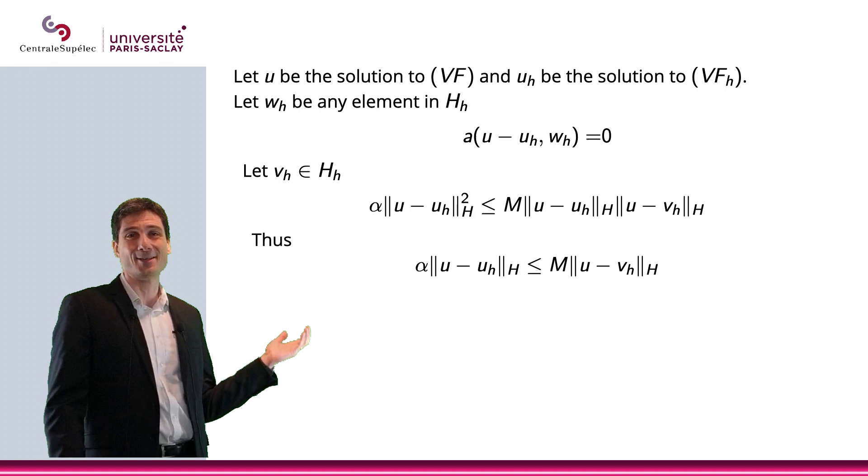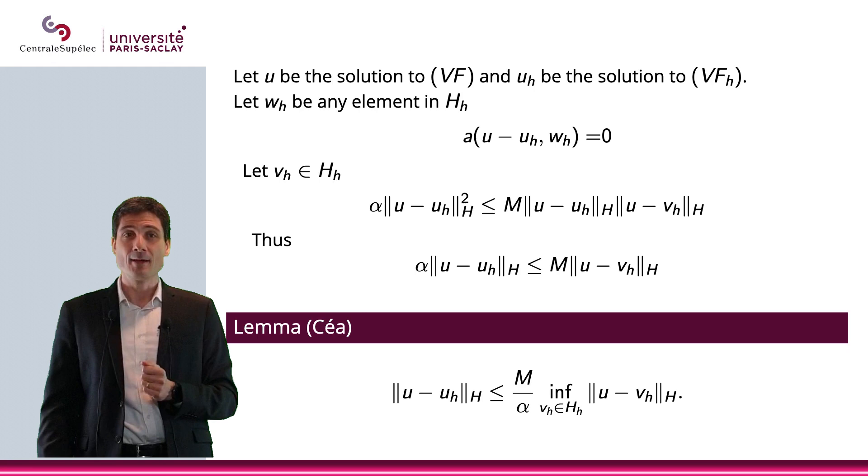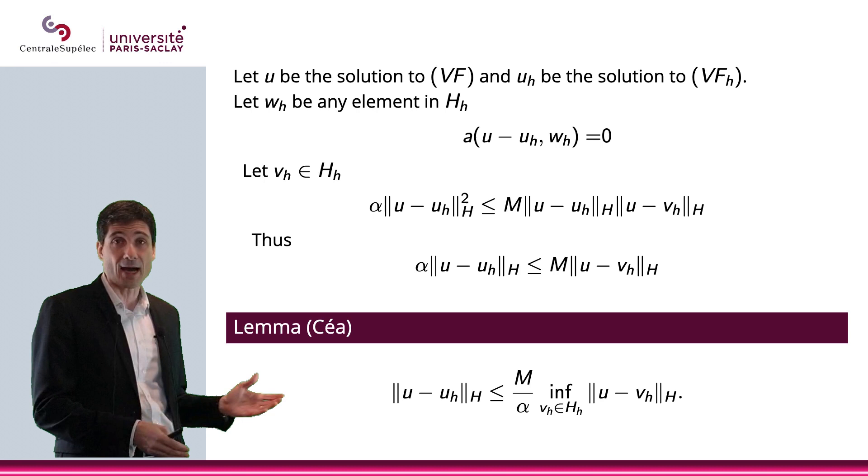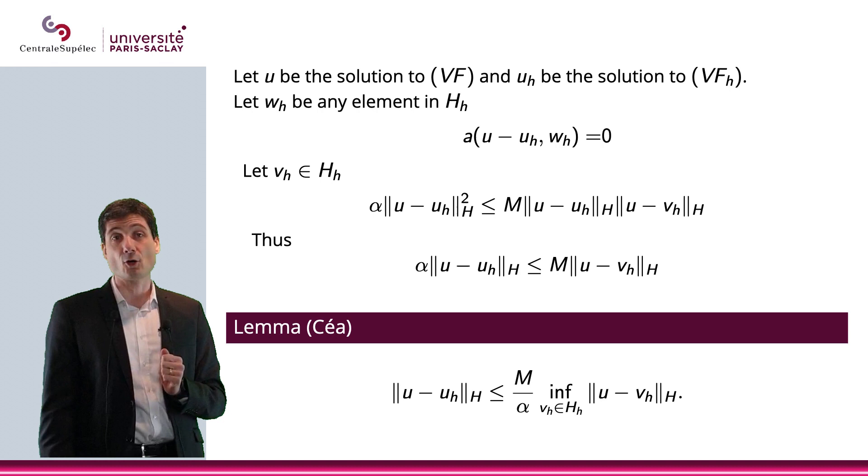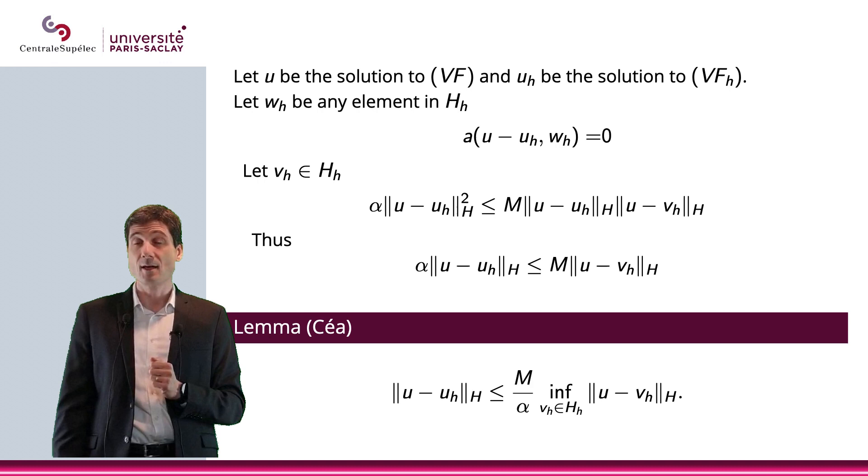And let me actually state this lemma here, the Céa's lemma, which bounds ||u - uₕ||ₕ by this right-hand side, where you can see M and α. M is the continuity constant, α is the coercivity constant, and then we have this term with the norm of u - vₕ in H.